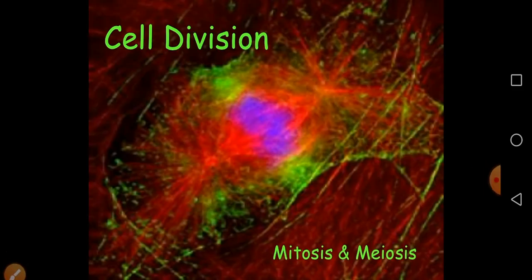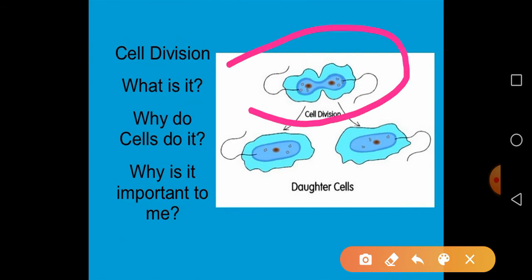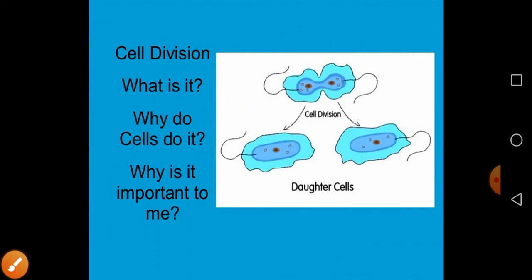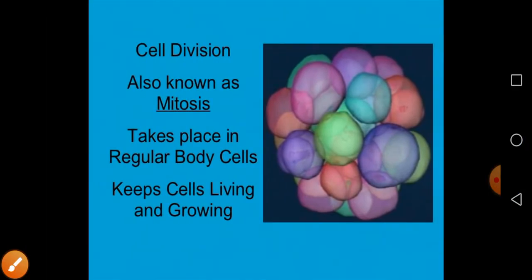Welcome to RMK Resolution. In this lecture, we are going to discuss cell division, which is also called the cell cycle. The cell cycle has two types: mitosis and meiosis. Cell division is the process where one cell rapidly divides into two cells, producing two daughter cells.